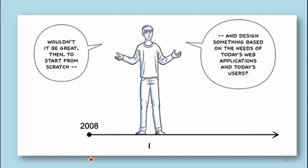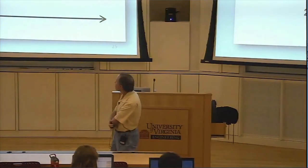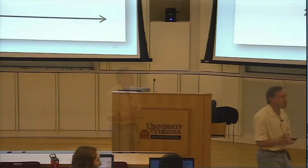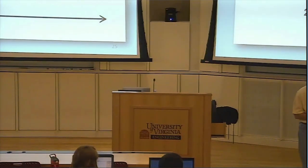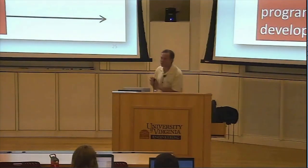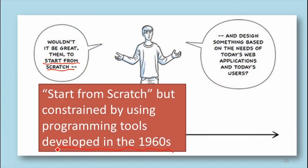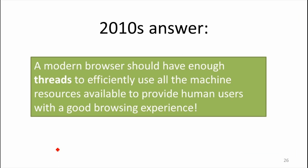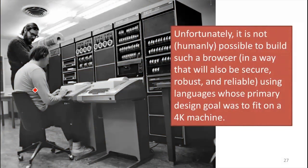2008 wasn't that long ago, and people knew about multi-core machines then. So why wasn't multi-threading the answer Google came up with? When they said starting from scratch, what did they really mean? The programming tools they were using were mostly C and C++ — things around for at least 30 or 40 years. Their definition of starting from scratch still meant sticking with programming tools developed in the 1960s. That meant you couldn't really achieve multi-threaded security and robustness, because multiple threads in those archaic languages leads to all the kinds of bugs that happen in multi-threaded C programs.